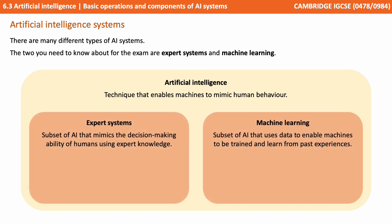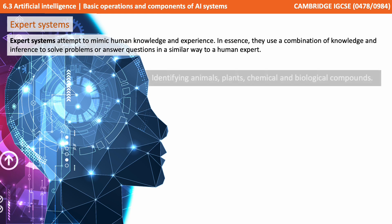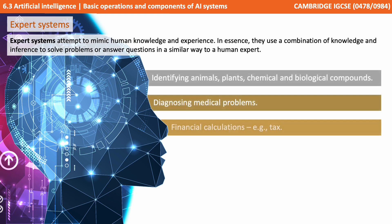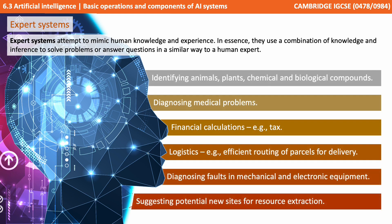There are many different types of AI systems, but the two you need to know about for the exam are expert systems and machine learning. Let's go through each of those now. Expert systems attempt to mimic human knowledge and experience. In essence, they use a combination of knowledge and inference in order to solve problems or answer questions in a similar way to that of a human expert.